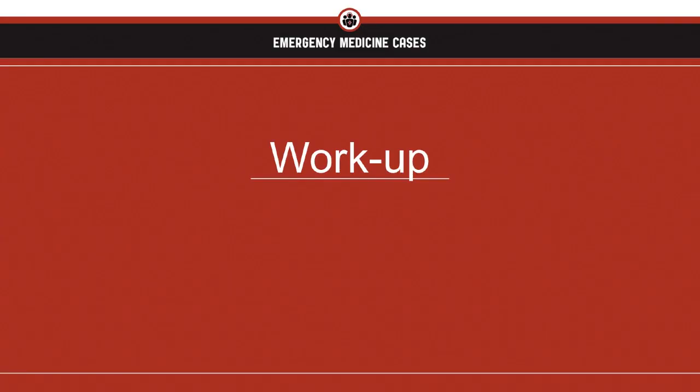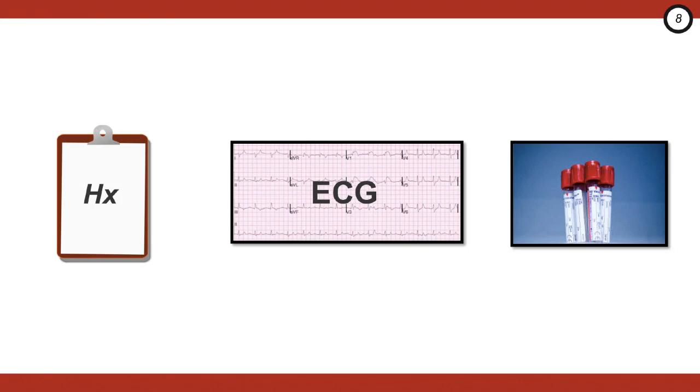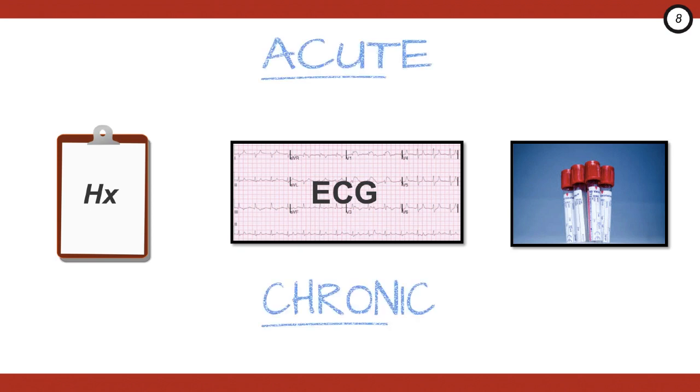What do you need to know about the workup for a dig toxic patient? We'll focus on three elements of the workup and give you some great pearls. There's the history, the ECG, and the blood work, specifically the dig level. The findings here are going to differ depending on if it's a chronic or acute overdose. And it's important because the chronic dig patients have a higher mortality and they can be really tricky to pick up on.